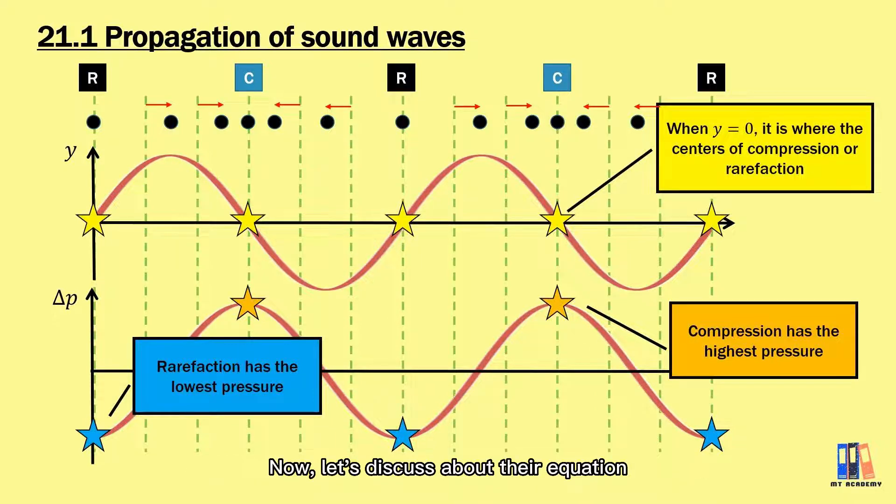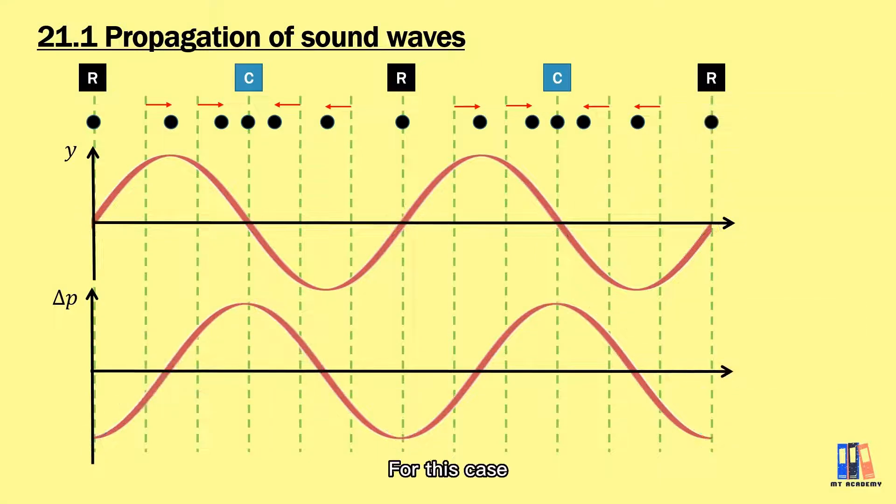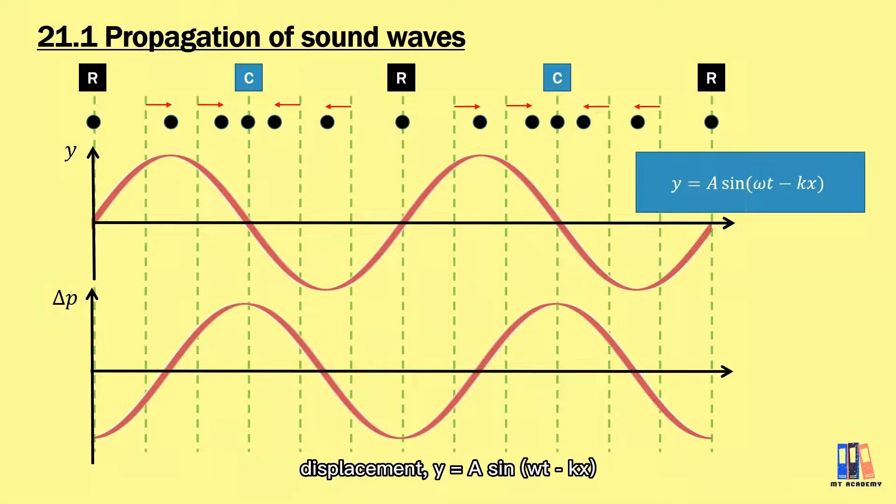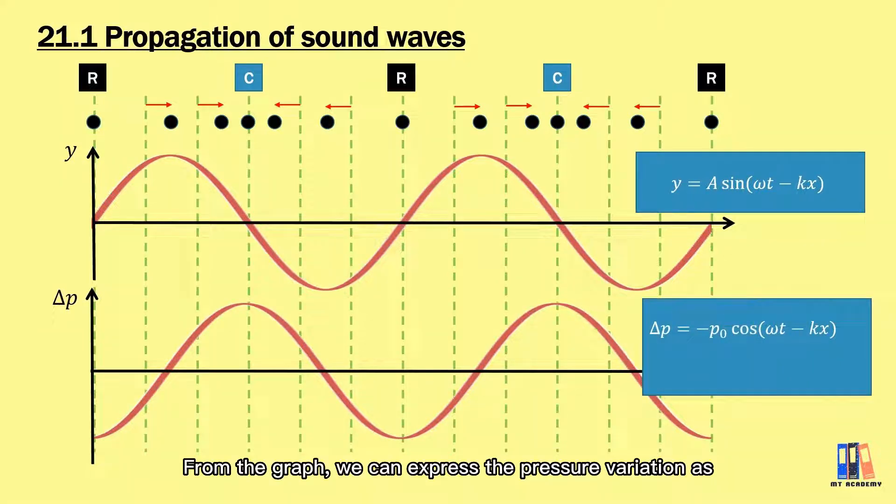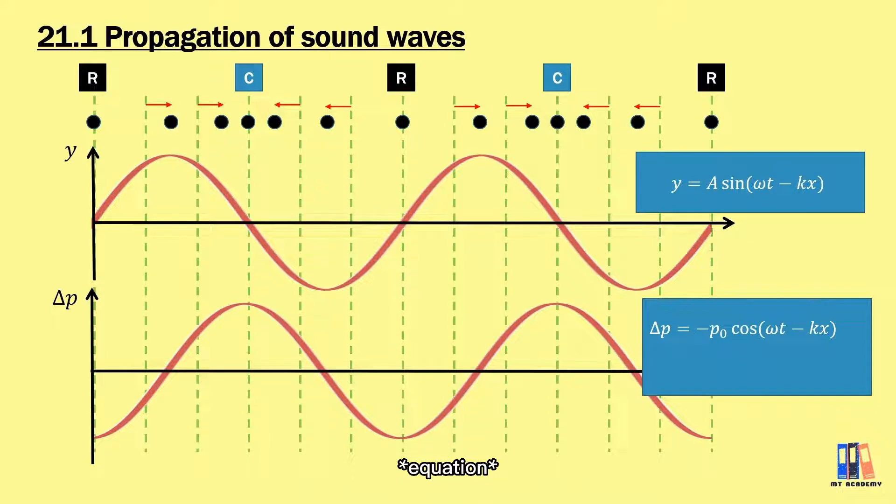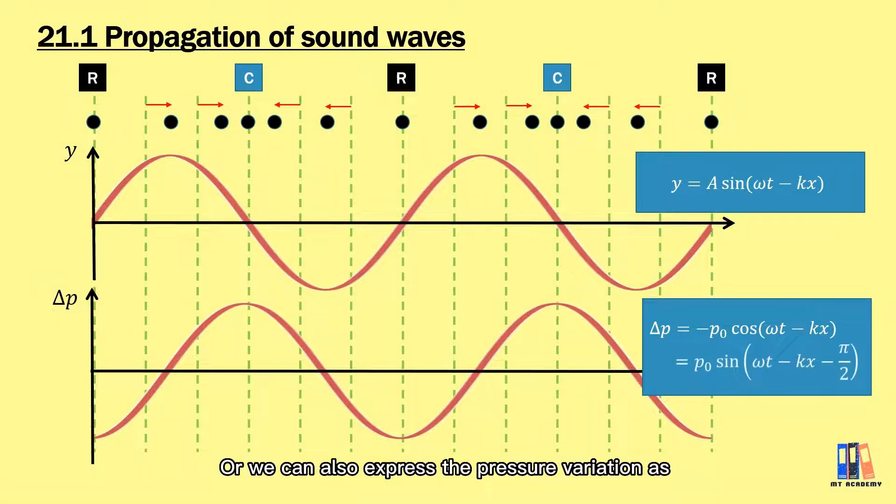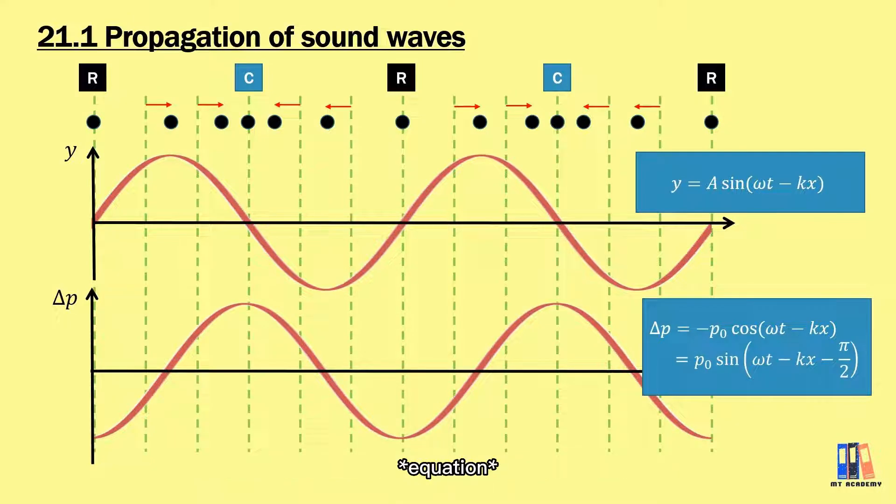Now, let's discuss about the equation. For this case, displacement y equals a sin(ωt - kx), which is the same as in the progressive wave. And we do not need to learn about the derivation of pressure equation. From the graph, we can express the pressure variation as -p₀ cos(ωt - kx), where the p₀ is the maximum pressure variation. Or we can also express the pressure variation as p₀ sin(ωt - kx - π/2) that we can deduce the pressure lags the displacement by 90 degrees.